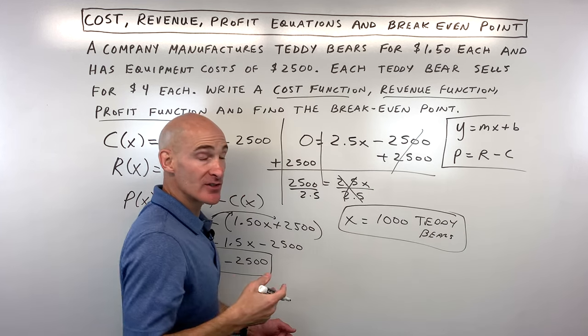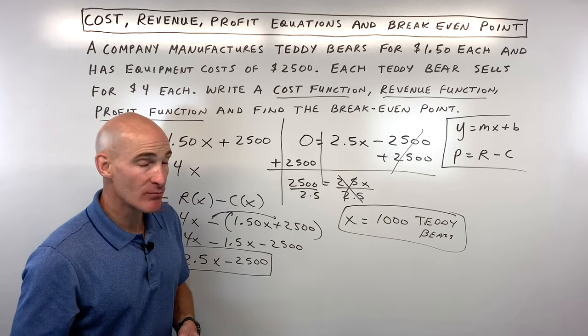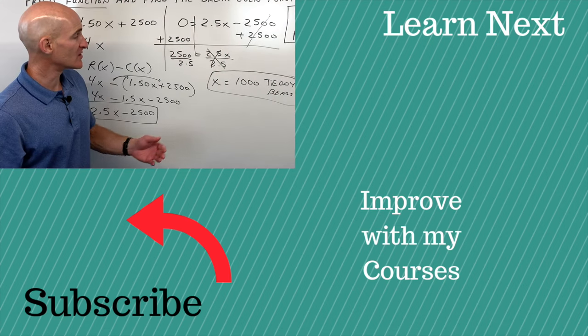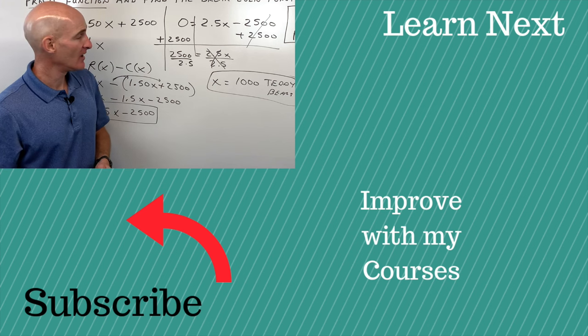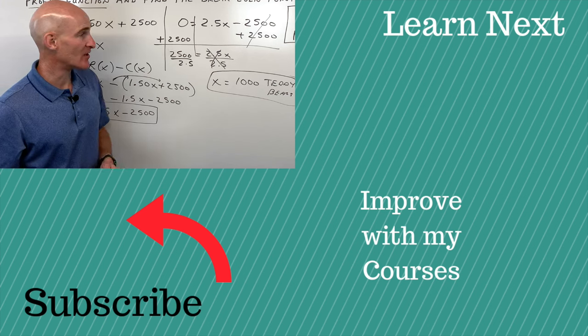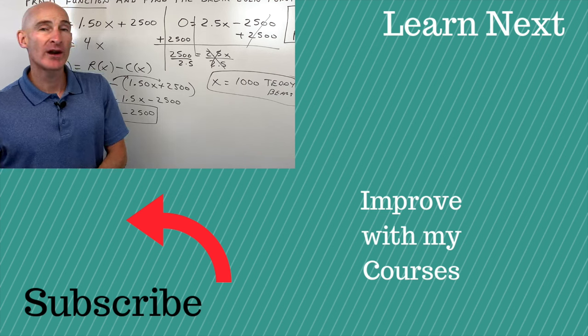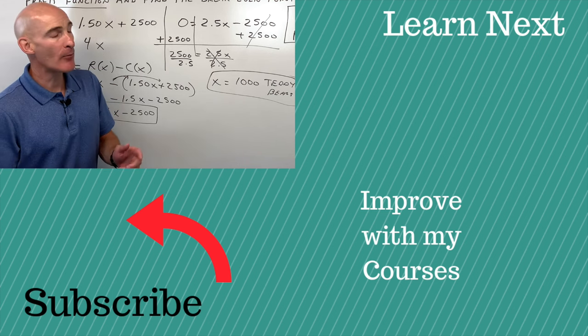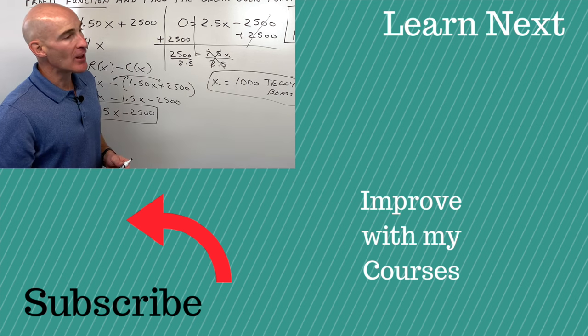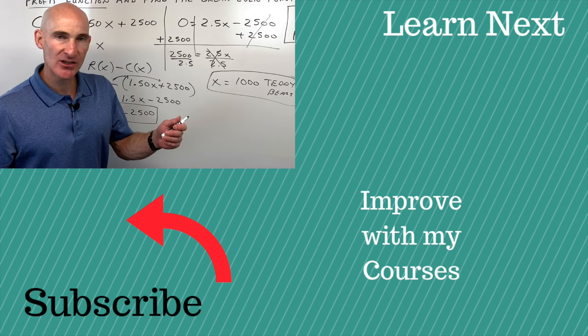So once you sell 1,001, then you're into the black as far as being profitable. And if you sell less than this, you're in the red, whereas you haven't made money yet. You haven't broken even. Great job. If you want to see another example where I talk about profit, revenue, costs, I'll put another video right there. Follow me over to that video and try maybe some of those problems on your own for extra practice. I'll see you in that video.